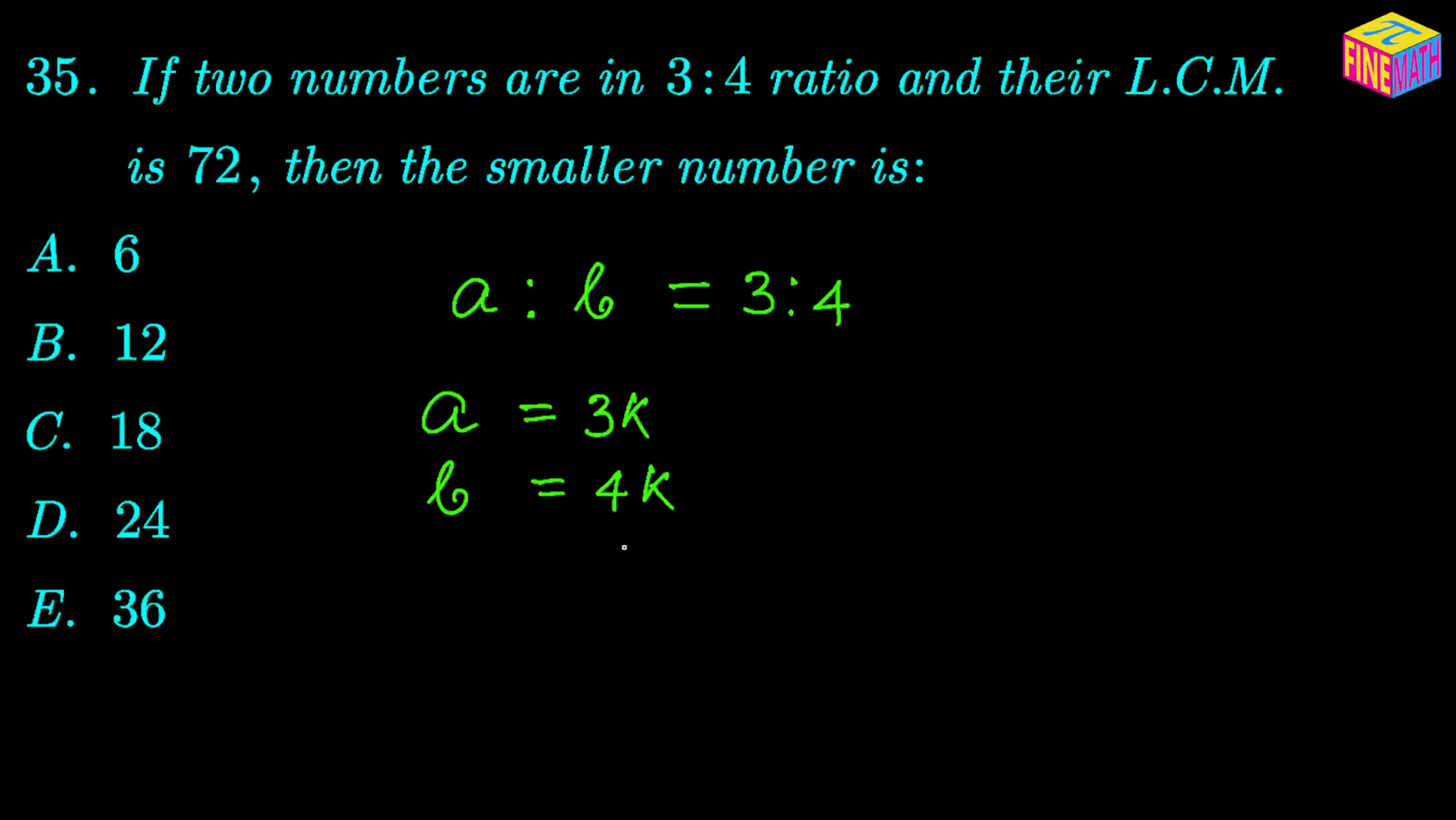So what would be the LCM of A and B? Well, if you think about it, the LCM of 3 times K and 4 times K would be 3 times K times 4 because we really don't need K twice. We can just have one of the Ks and the 3 and a 4, which would be good enough for the LCM.